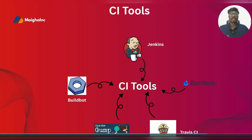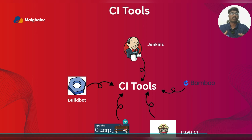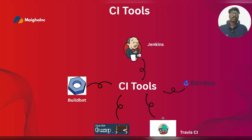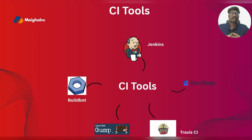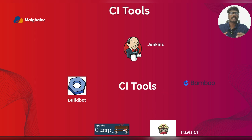Apache Gump is one of the oldest CI tools, mainly used for Java projects, and not commonly used today — think of it like the grandfather of CI, good in its time but replaced by newer tools. Travis CI is popular with GitHub users, great for open source projects, and very easy to set up.